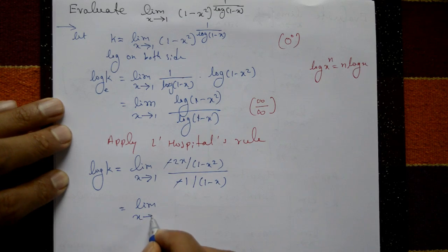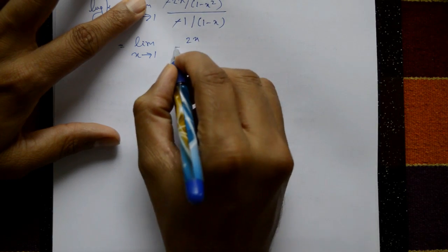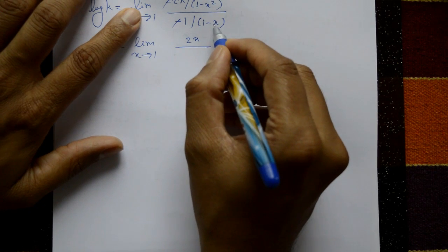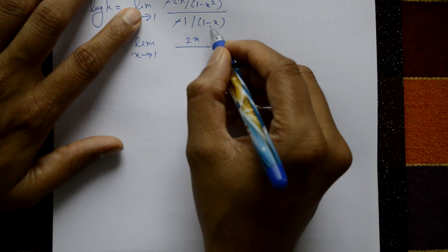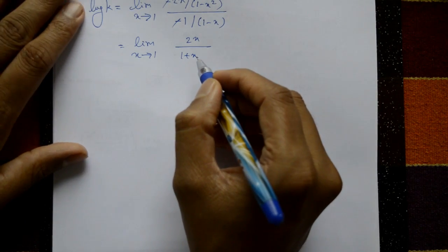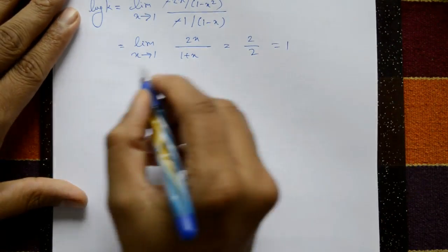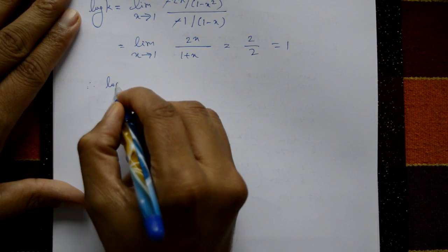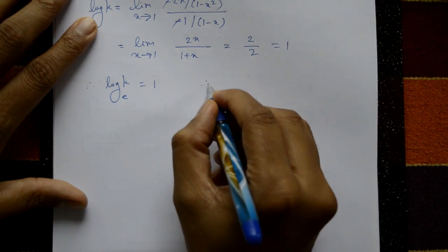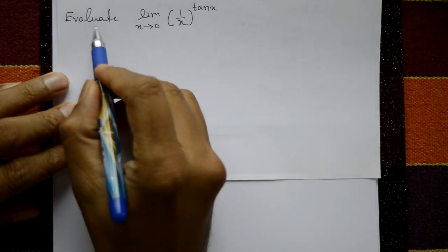This simplifies to the limit as x tends to 1 of 2x upon (1 minus x squared) times (1 minus x). Factoring 1 minus x squared as (1 minus x)(1 plus x), the (1 minus x) cancels. Taking x equals 1 gives 2 by 2, which equals 1. Therefore log k equals 1, so k equals e raised to 1, which is e. This is the required solution.